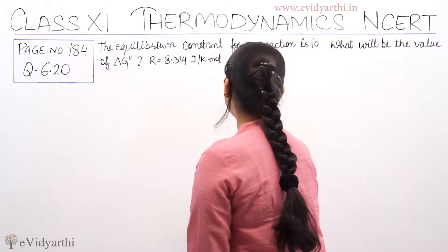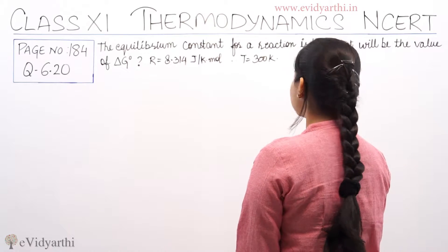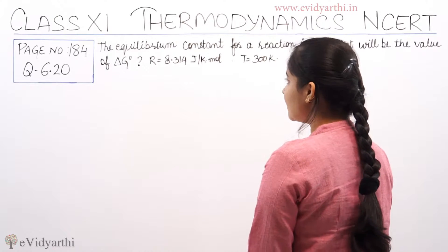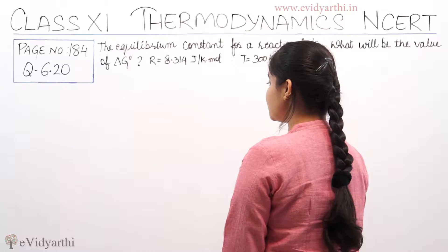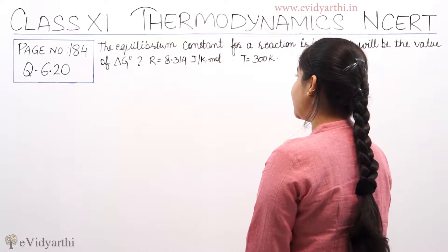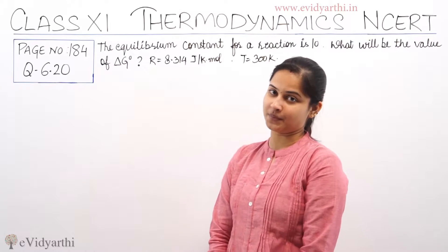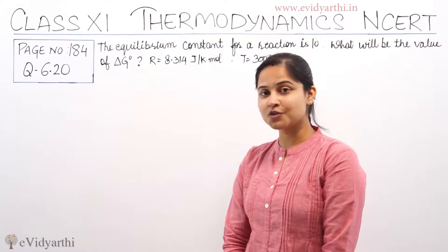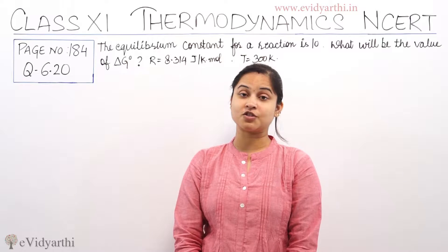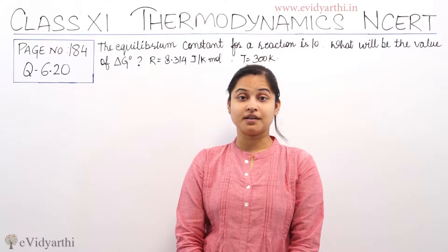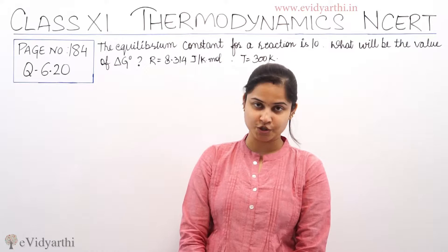The equilibrium constant for a reaction is 10. What will be the value of delta G naught? R is equal to 8.314 joules per Kelvin per mole, and the temperature given to us is 300 Kelvin. We need to find out the value of delta G naught, that means the standard value of Gibbs free energy.